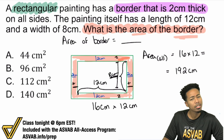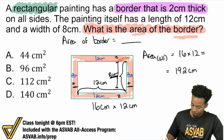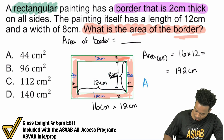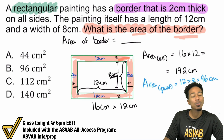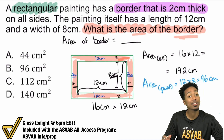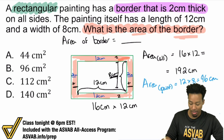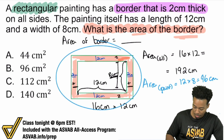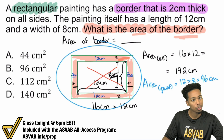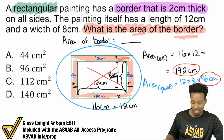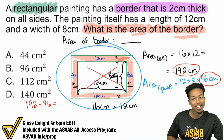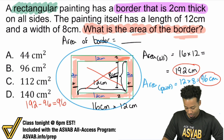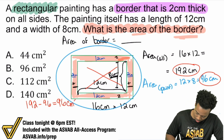We have 192 square centimeters for the total area. Now let's find the area of just the painting itself — that's 12 times 8, which is 96 square centimeters. Now we need to subtract those areas. The plan was to find the whole area and then take away that middle piece — the painting — to isolate the border. So: 192 minus 96 gives us 96 square centimeters.